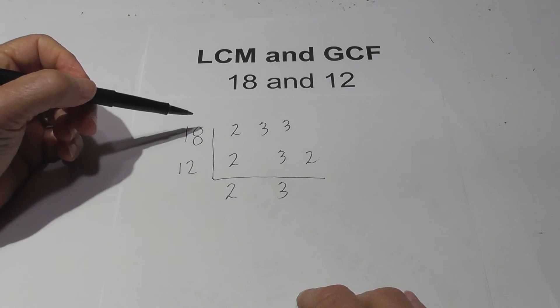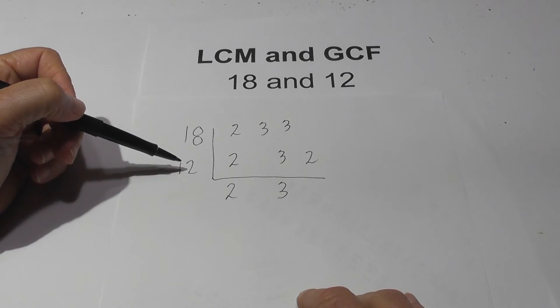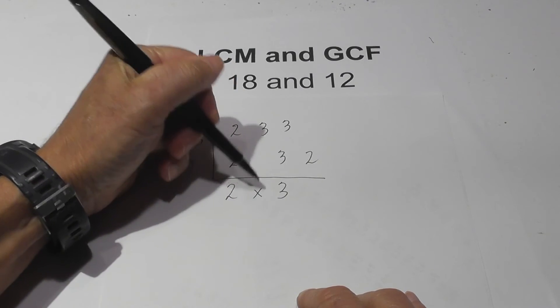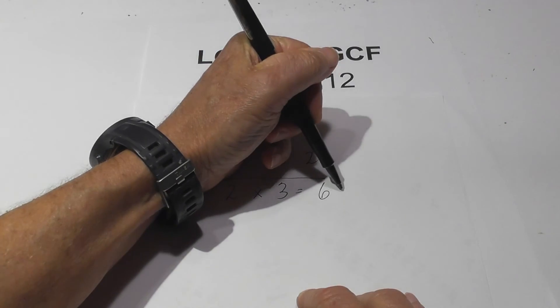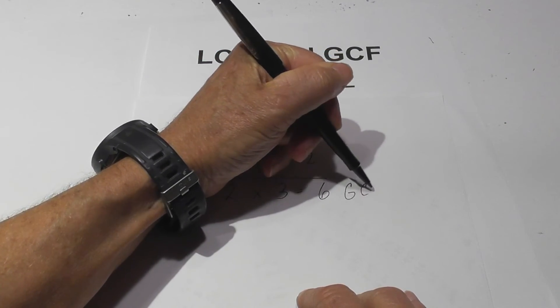So in other words you're looking for the prime numbers in both 18 and 12 and that's 2 and 3, and then just multiply these together so the greatest common factor equals 6.